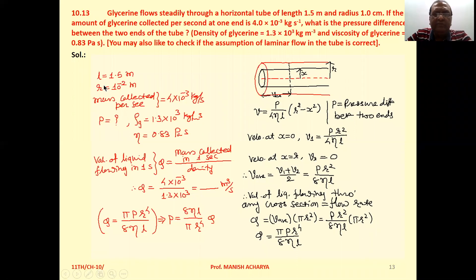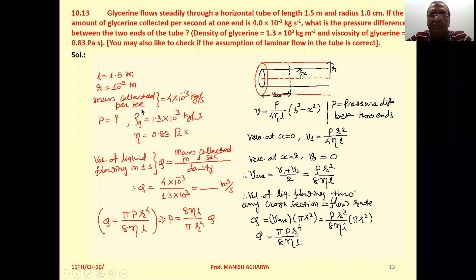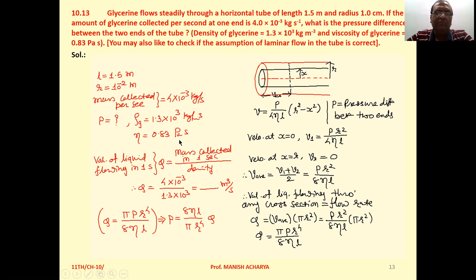Length of the tube is given as 1.5 meter. Radius of the tube is 1 centimeter, that is 10⁻² meter. Mass collected per second of the fluid flowing through it is 4 × 10⁻³ kilogram per second. Density of glycerin is 1.3 × 10³ kilogram per meter cube and coefficient of viscosity is 0.83 pascal second.